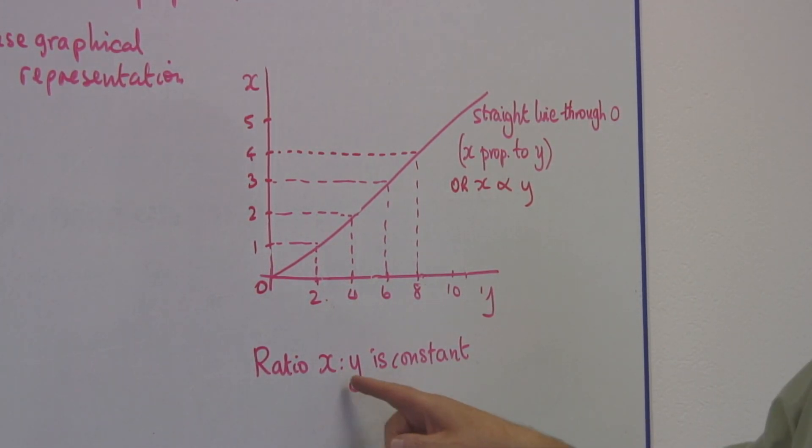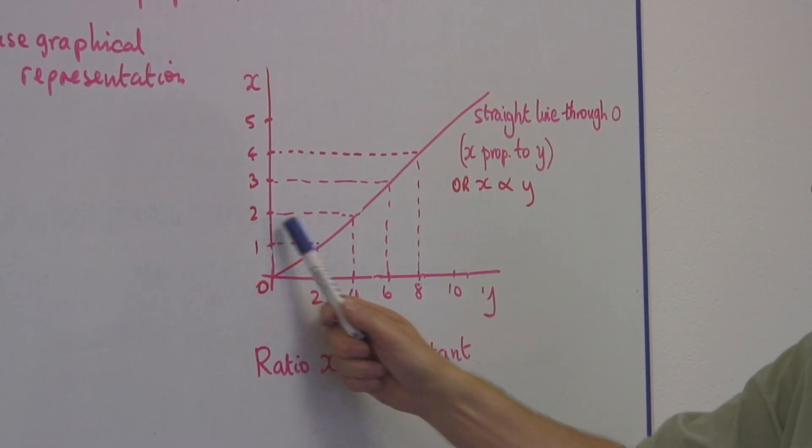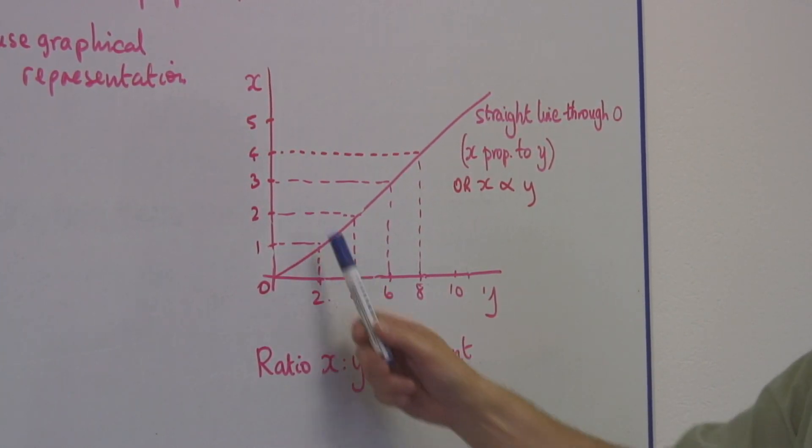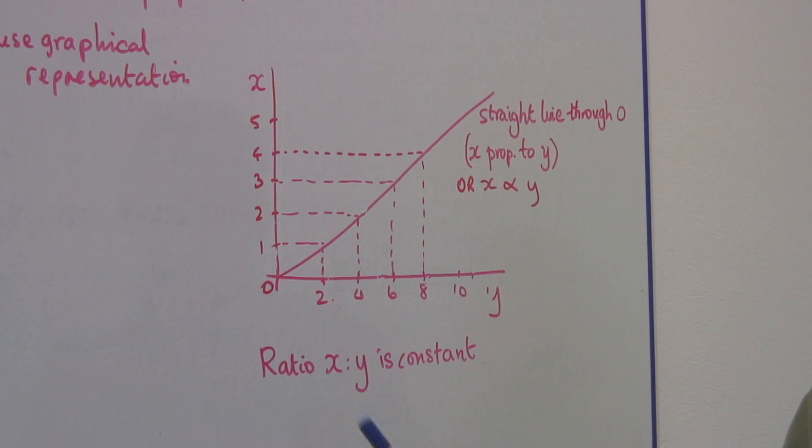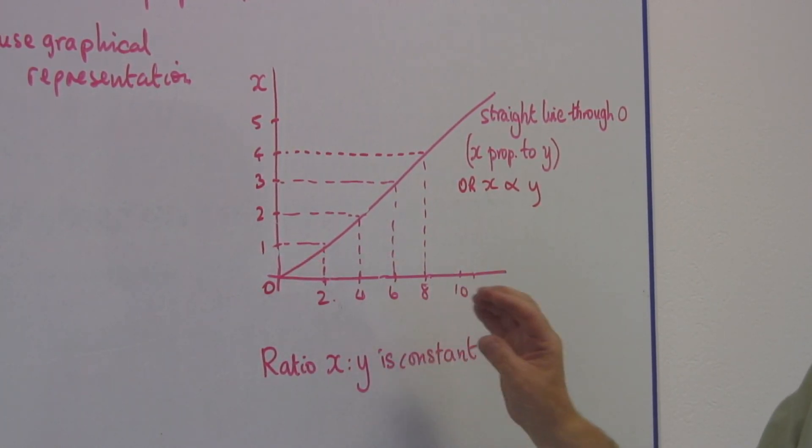And the ratio of x to y, that is, x divided by y, is always going to be the same. 1 divided by 2 is 0.5. 2 divided by 4, 0.5. 3 divided by 6, 0.5. 4 divided by 8, 0.5. It's a constant ratio.